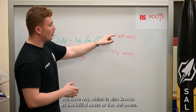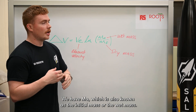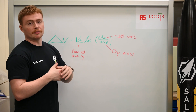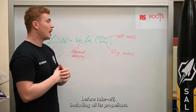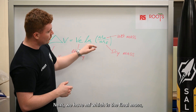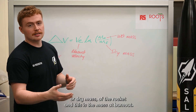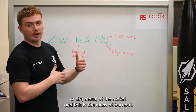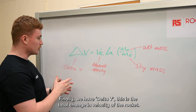First we've got M0, which is our wet mass. The wet mass of the rocket, or the initial mass, is the mass before takeoff and that includes your payload and all of your propellant. Then we've got MF, which is your dry mass or final mass — that is your mass at burnout. All of that equals our delta V.